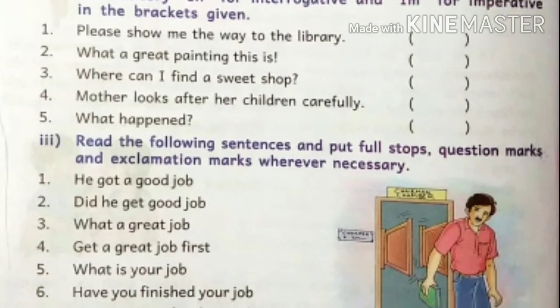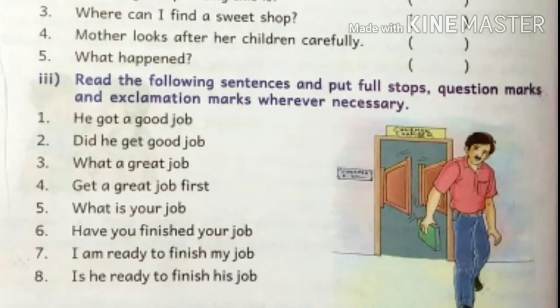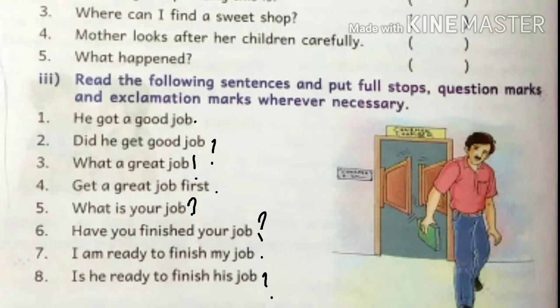Roman numeral three: Read the following sentences and put full stops, question marks, and exclamation marks wherever necessary. Number one: 'He got a good job.' — put a full stop; it is a declarative sentence. Number two: 'Did he get a good job?' — question mark; interrogative sentence. Number three: 'What a great job!' — exclamation mark; exclamatory sentence.